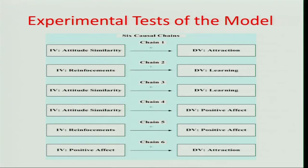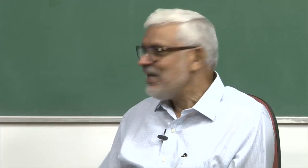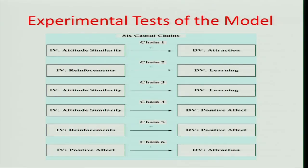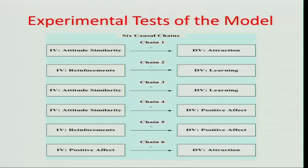Finally, the sixth chain tests whether directly manipulating affect leads to attraction and repulsion. To test the reinforcement model, we were required to perform experiments falling within these 6 different causal chains. It was purely a stimulus-response point of view.